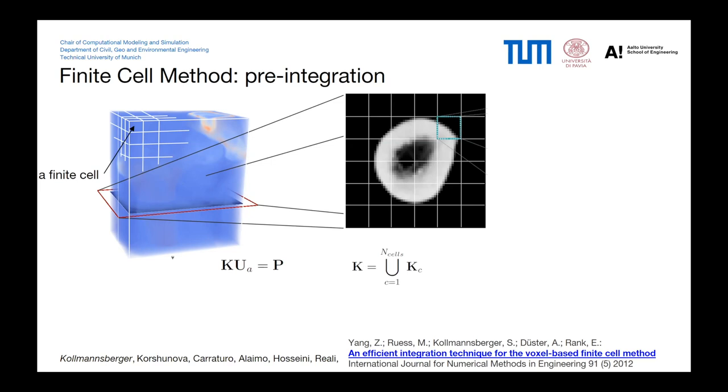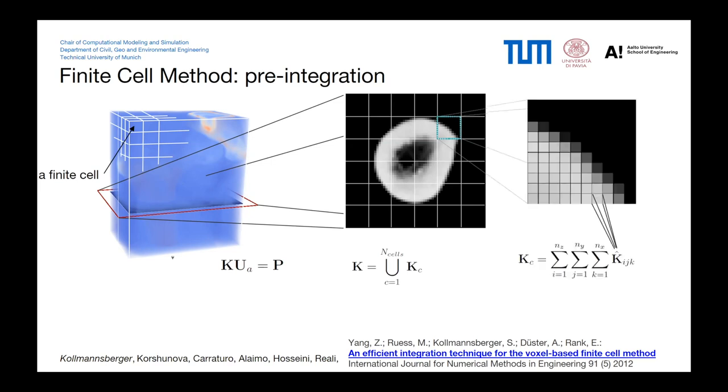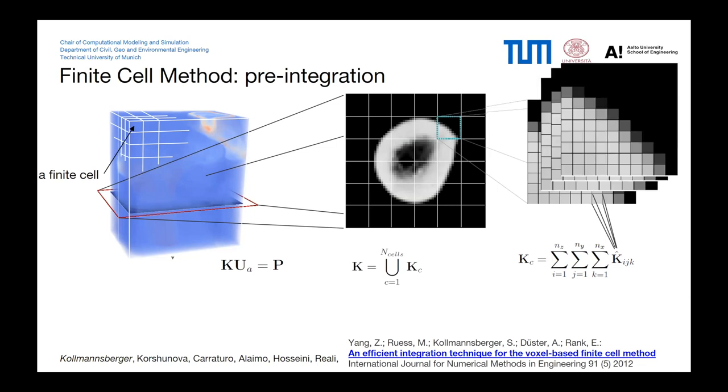One finite cell can contain n by n by n voxels. Within these voxels, we have a constant Hounsfield unit, and therefore a constant material property, which allows, in the linear applications, for a pre-integration of these sub-stiffnesses, which then can be assembled to one finite cell. The finite cell is the unit which spans the shape functions, much like in a finite element method. And then the assembly of these finite cell stiffness matrices make up the global stiffness matrix that can then be inverted to find the unknowns that you're solving for.